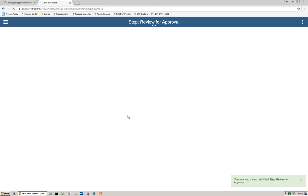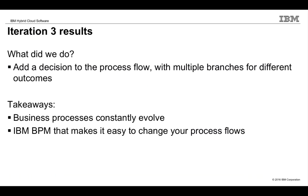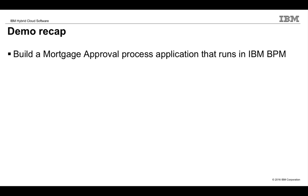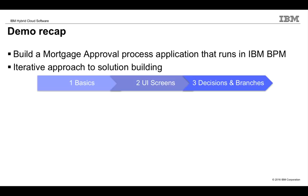Iteration three is now complete. To review, we added a decision to the process flow and had multiple branches to process the different outcomes. Business processes evolve all the time — you're constantly learning new things, getting new requirements, reacting in different situations. IBM BPM makes it really easy for you to change and test your process flows. Let's recap what we did today: we built a mortgage approval process application that runs in IBM BPM, and we took an iterative approach to solution building.